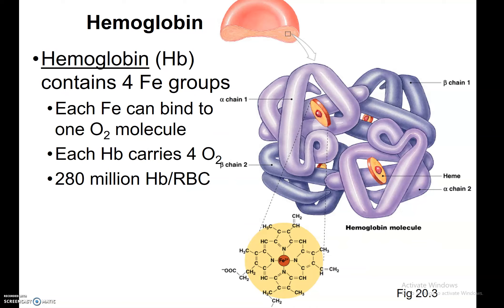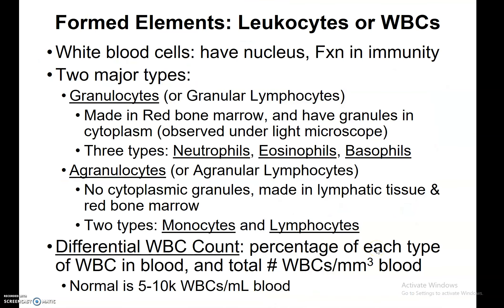This allows a single hemoglobin molecule to carry up to four oxygen molecules — O2 on each of the four chains. We call that the oxygen carrying capacity for hemoglobin, and you'll talk about that more in physiology.